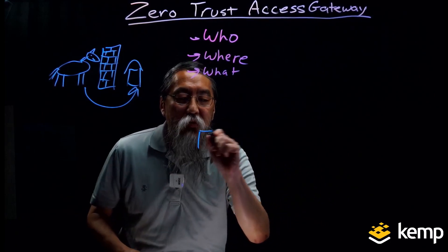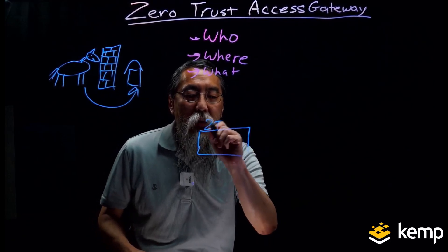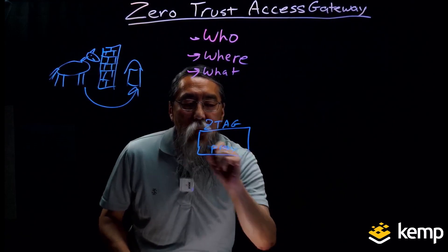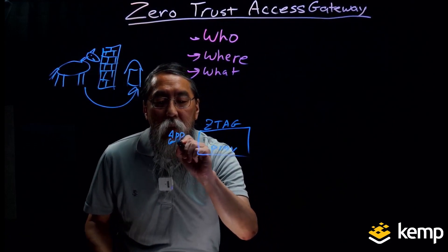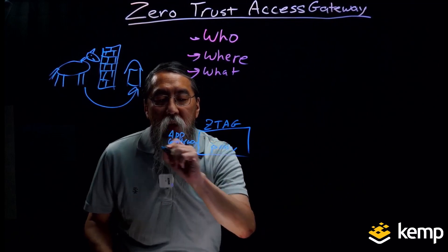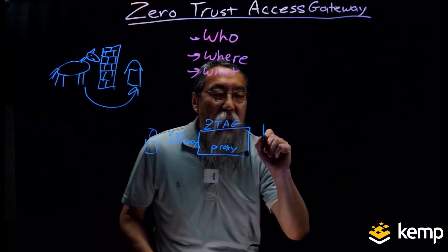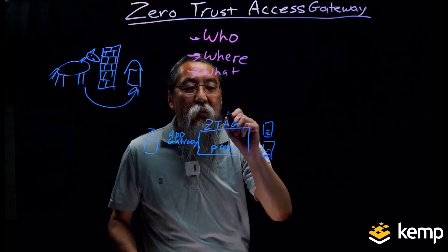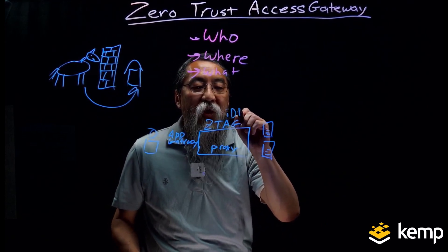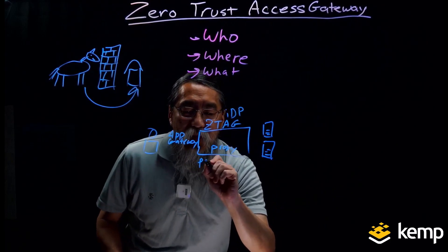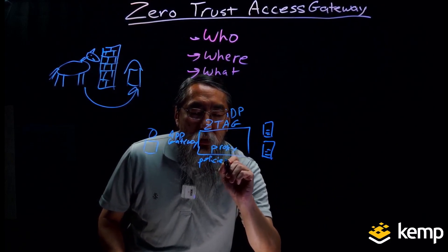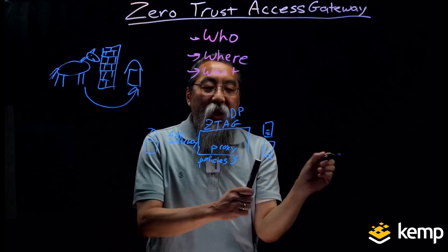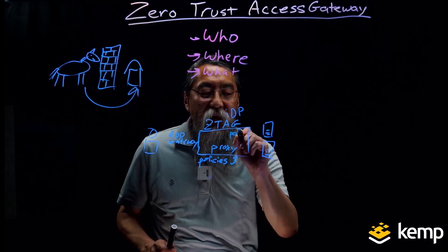It combines identity provider integration with intelligent content detection and policy enforcement to optimize and secure critical application infrastructure. I can build my Zero Trust Access Gateway, and it acts as a proxy or an application gateway. It integrates with the identity provider authentication databases, and it applies policies that the business has defined on who, what, and where can access these applications — providing policy enforcement.